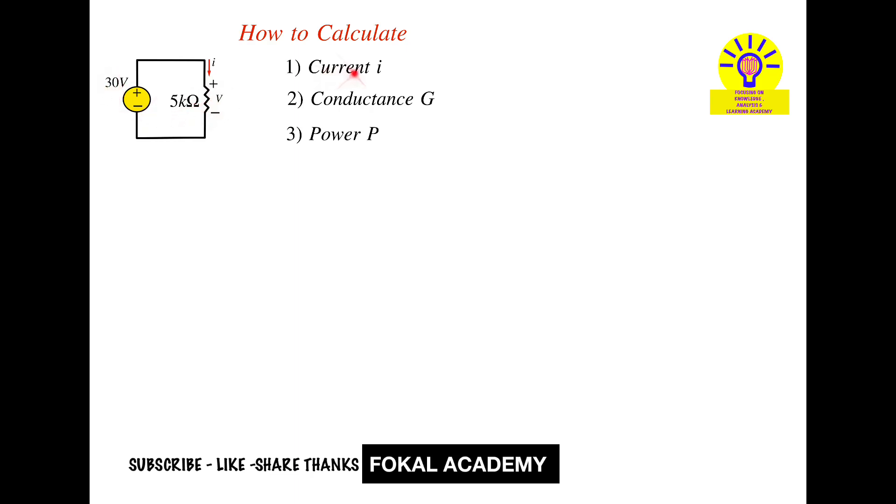Now, how can you find the current I, conductance G, and power P for the given circuit? Here, only one resistor is present, so the voltage across it is 30 volts. The voltage drop across 5 kilo ohms is V, equal to 30 volts.